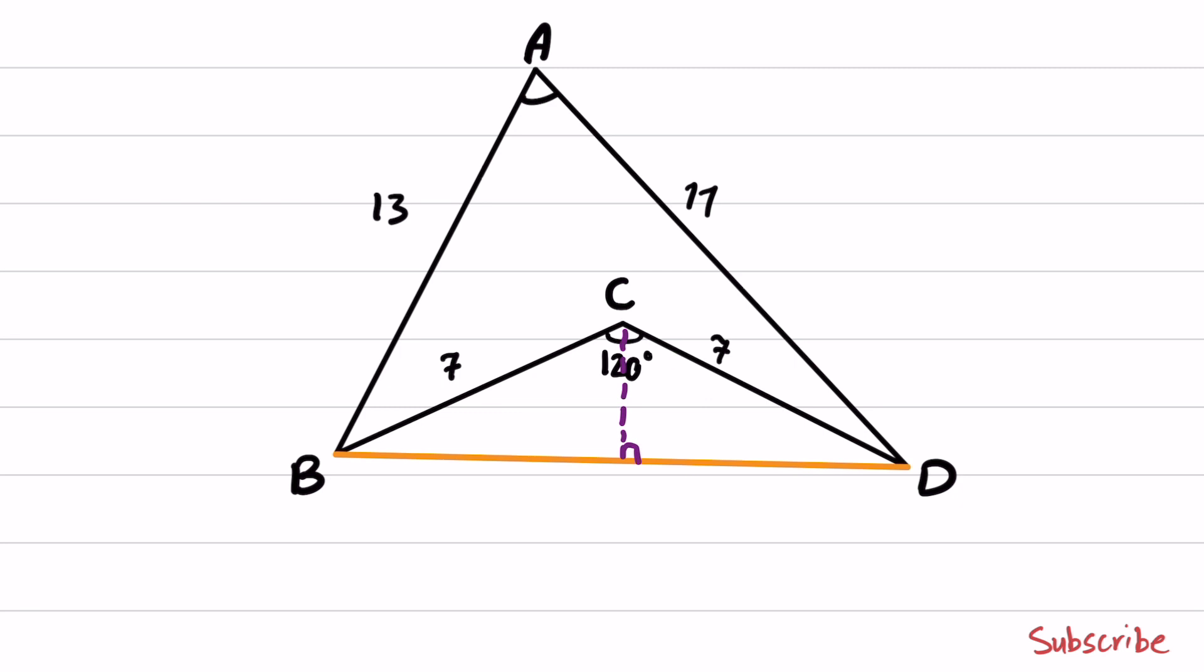we will get 60 degree here, 60 degree here. And because this triangle is a right triangle, we have 30 degree here and 30 degree here.